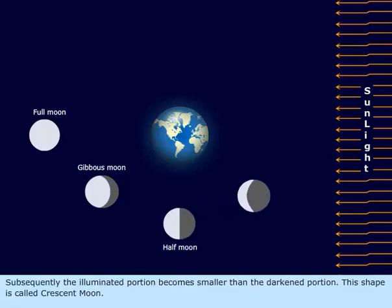Subsequently, the illuminated portion becomes smaller than the darkened portion. This shape is called crescent moon.